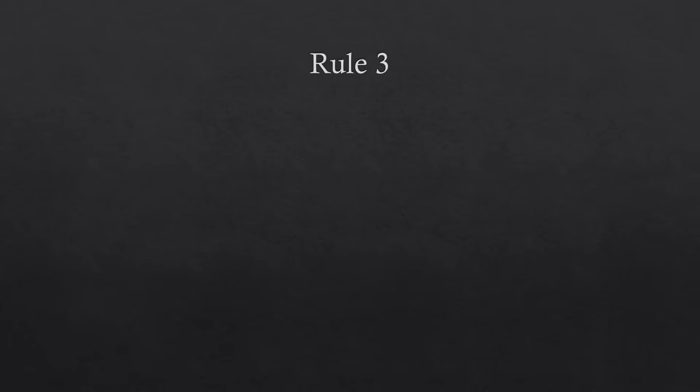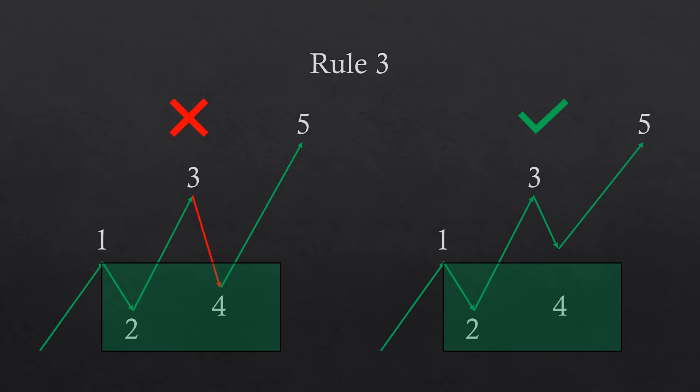Rule three states that wave four must not retrace into the territory of wave one. If it does, we are not talking about a wave four anymore. A hypothetical wave count where wave four retraces into the territory of wave one must be discarded as it breaks the third rule. A correct wave count requires that wave four does not retrace into the territory of wave one.